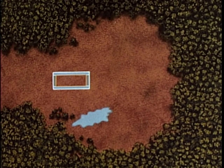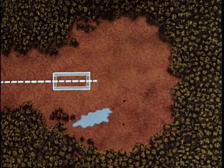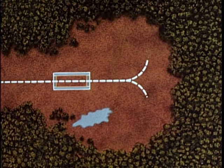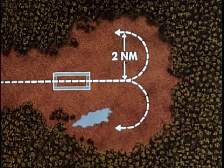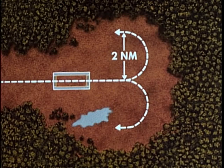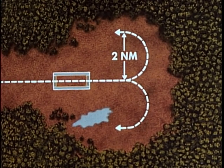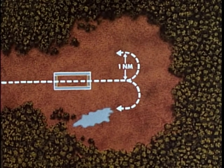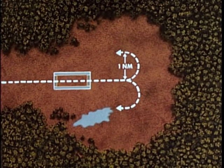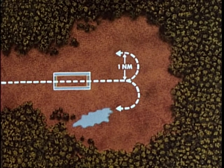For one-approach landing zones, a sufficiently cleared area must exist to permit a level 180-degree turn to either side of the landing zone, within a radius of 2 nautical miles for medium aircraft like the C-123, or 1 nautical mile for light aircraft and special light aircraft like the U-10.